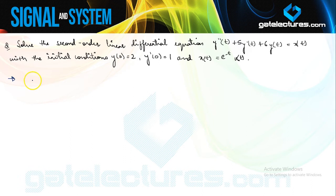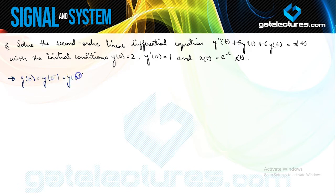We are taking unilateral Laplace transform because we know that this system is a causal system, starting from t = 0. One assumption I am making is that y(0) = y(0−) = y(0+). I am taking this assumption for every initial condition, also for y dash.